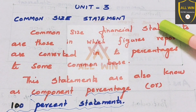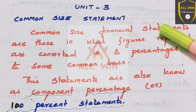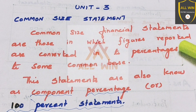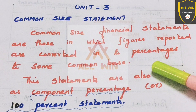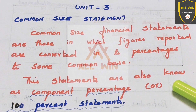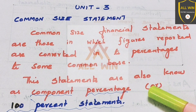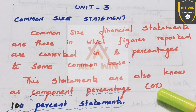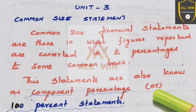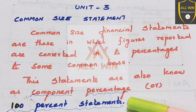Common size financial statements are those in which figures reported are converted into percentages to some common base. These statements are also known as common percent or hundred percent statements.